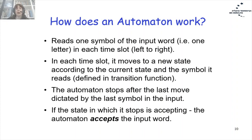Let's talk about the modus operandi of an automaton — how does it work? We read the input string letter after letter until we reach the end of the string. Each time we read only one letter and move from left to right. After reading a letter, we have to decide where we move: we look at our current state and the input symbol and find the arrow from the current state with that input letter written on it.